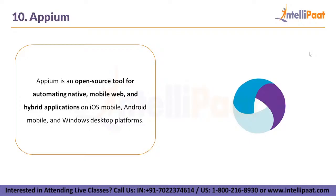Last but not the least, we have Appium. Appium is an open source tool for automating native, mobile web and hybrid applications on iOS mobile, Android mobile and Windows desktop platforms. The advantages include support for both Android and iOS where you can create tests for both using the same API. Appium supports all programming languages and does not require any additional software to start testing.